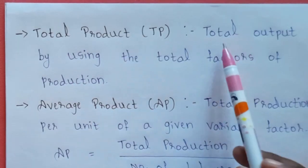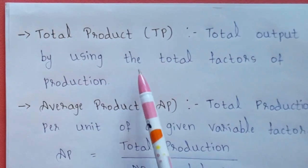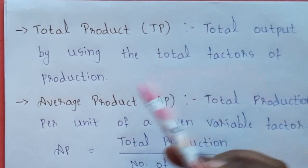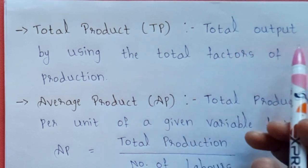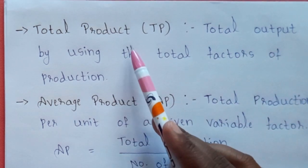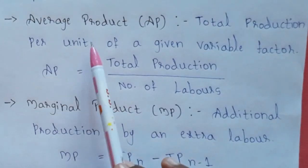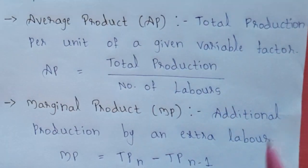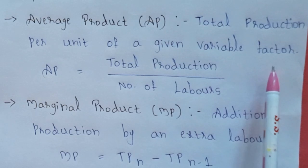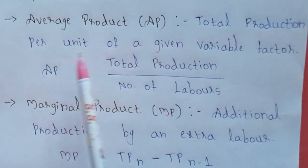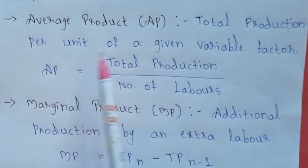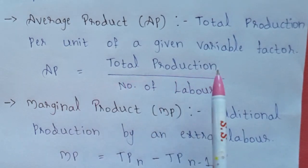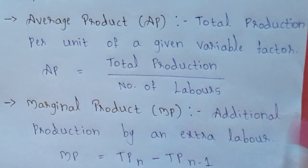Total product means total output by using all the total factors of production. Average product means total production per unit of a given variable factor. Average product is equal to total production divided by number of labours.